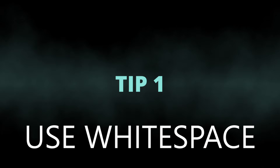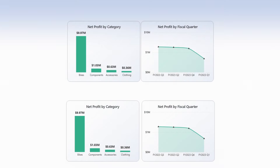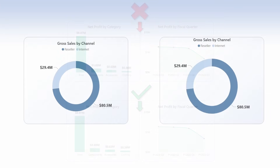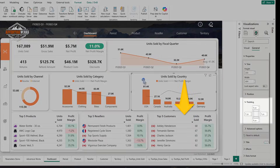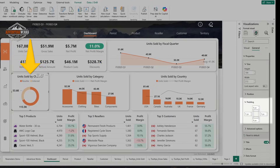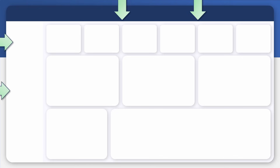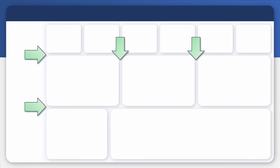Tip number one: master the art of white space. Give your data room to breathe by adjusting your margins and your padding. Keep those settings consistent throughout your entire report so it feels polished both inside your visuals and outside. Use Microsoft PowerPoint to create professional backgrounds with consistently spaced boxes for your visual groups to make your layout hierarchy clear.